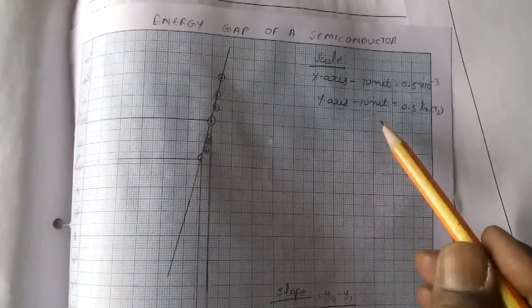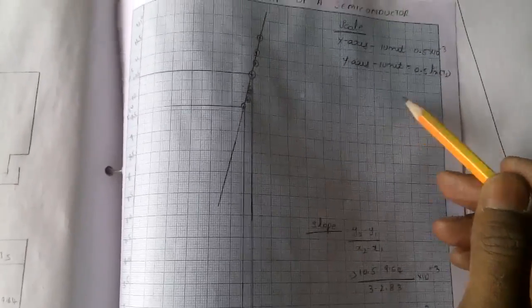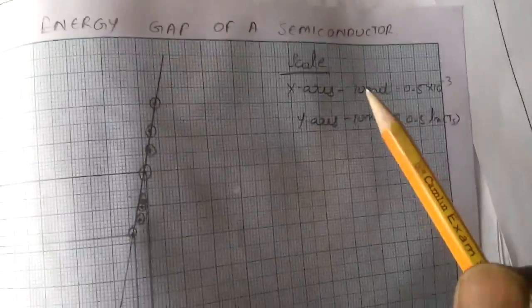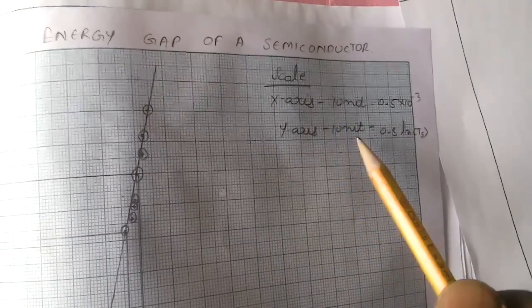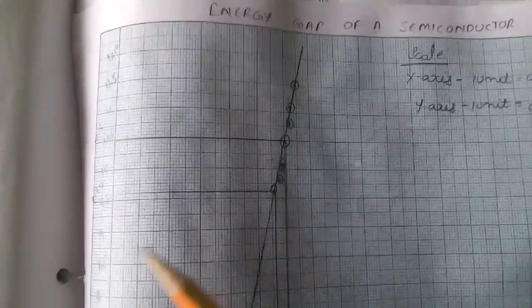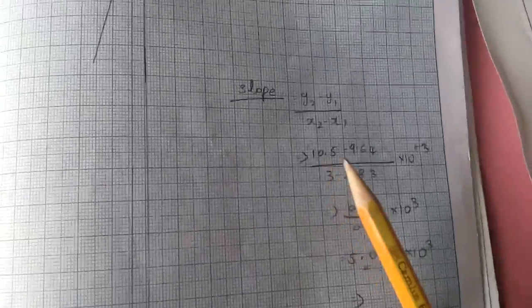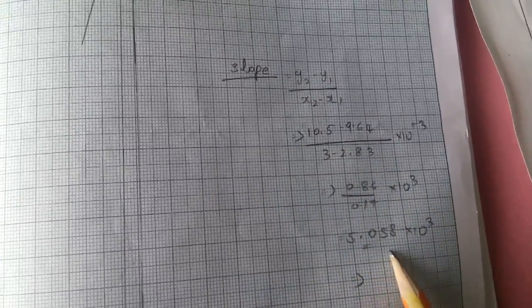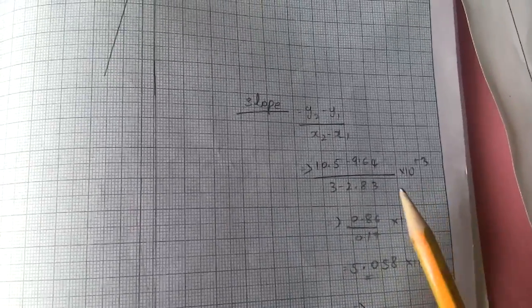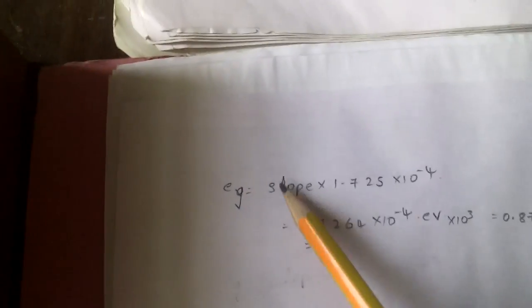The origin of the graph does not start from zero — it starts from some logarithm value. Make sure you mention what the origin is and clearly state the scale: how much one unit on the x-axis represents and how much one unit on the y-axis represents. He drew the straight line, took two points, calculated the slope, and got a value of 5.08 × 10^3. Since 10^-3 was on the axis, it becomes 10^+3 when moved to the other side.